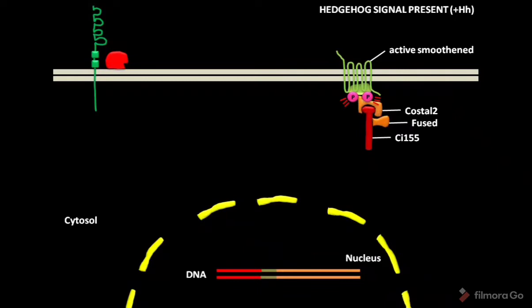In this case, the COSTAL2 cannot bind to PKA, GSK3 and CK1. So, CI155 will not be cleaved.